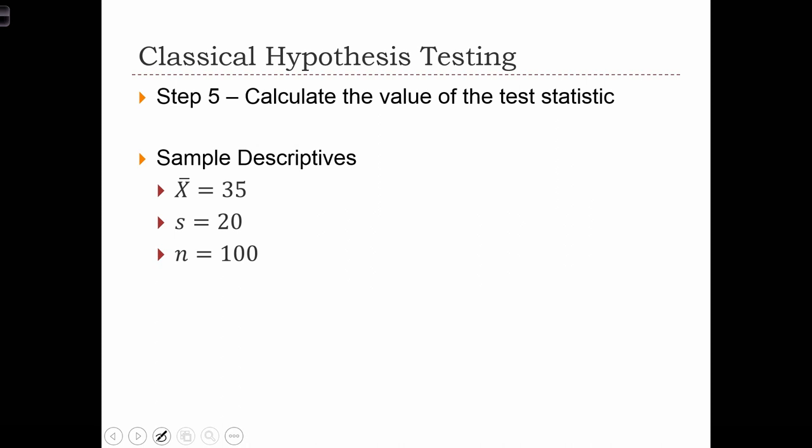Step 5 is to calculate the value of the test statistic. Recall that the test statistic z equals x bar minus mu h over the standard error of the mean, which is just 35 minus 30 over s over root n, so 20 over 10, over 2, and this equals 2.5.